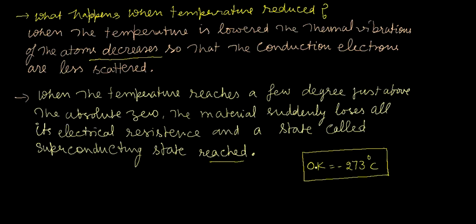Absolute zero is 0 Kelvin, which equals minus 273.15 degrees Celsius. At this point, the electrical resistance becomes zero, and this state of the material is known as the superconducting state.